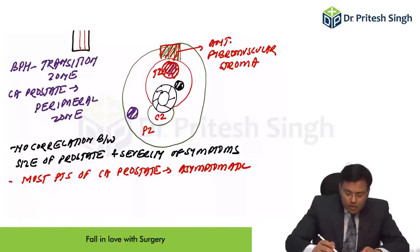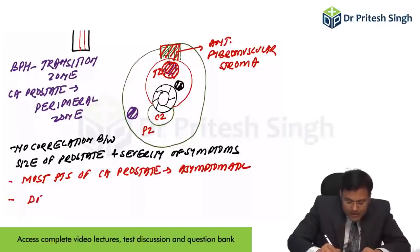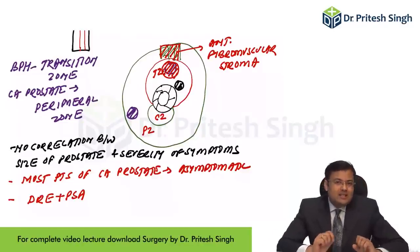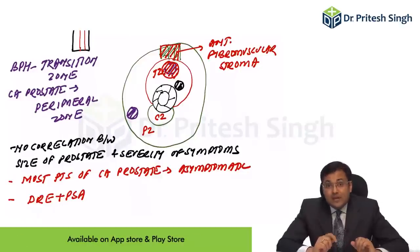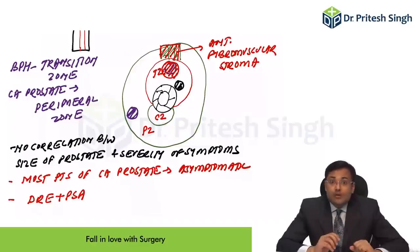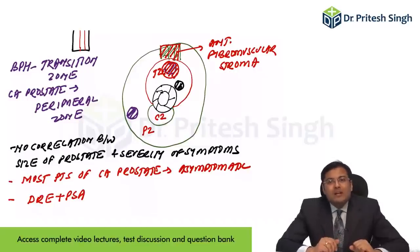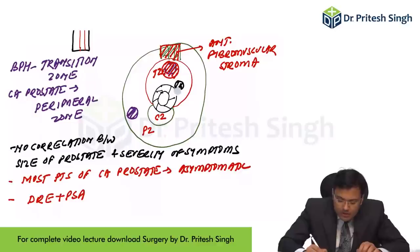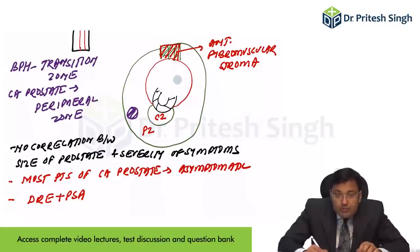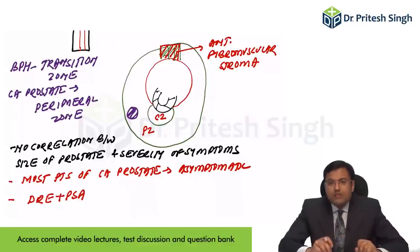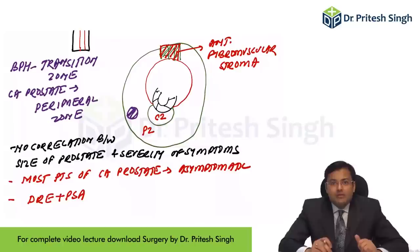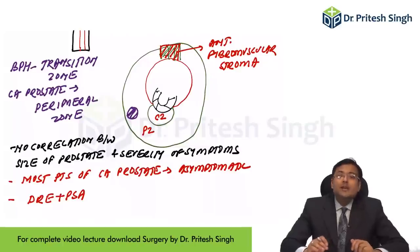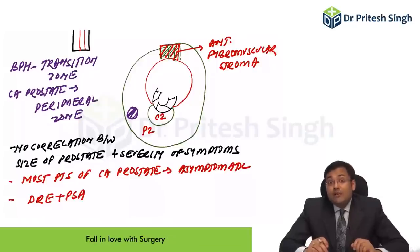Third point: screening of carcinoma prostate is done by digital rectal examination plus PSA (prostate specific antigen). In patients of BPH, we perform TURP — transurethral resection of prostate. In TURP, we remove the prostatic tissue located in the transition zone. Since the most common site of carcinoma is the peripheral zone, TURP is not protective for carcinoma prostate.